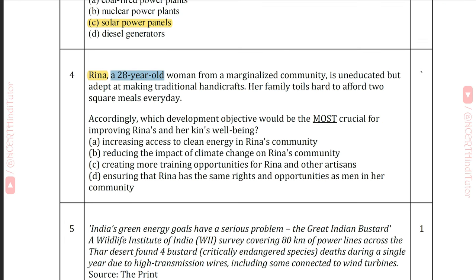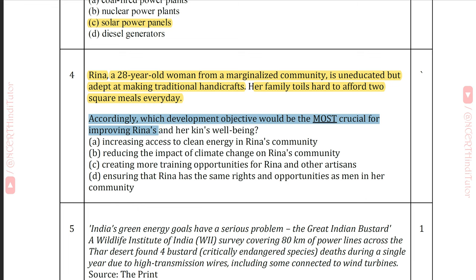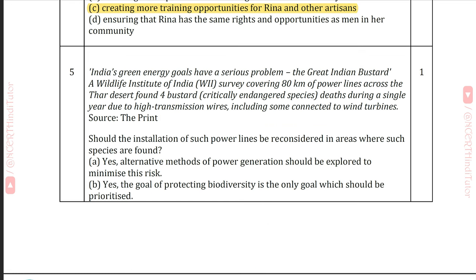Question 4: Rina, a 28-year-old woman from a marginalized community, is uneducated but adept at making traditional handicrafts. Her family toils hard to afford two square meals every day. Which development objective would be most crucial for improving Rina's and her family's well-being? Answer C: Creating more training opportunities for Rina and other artisans.